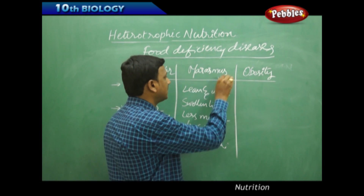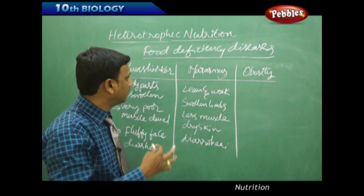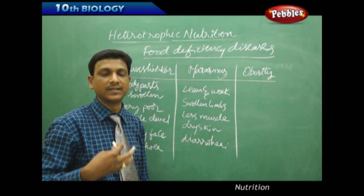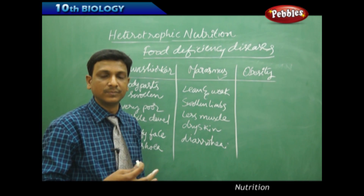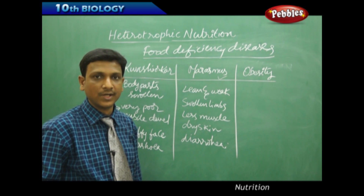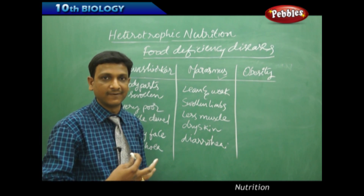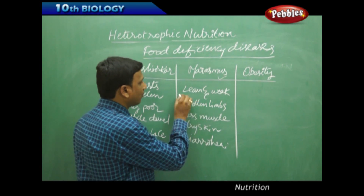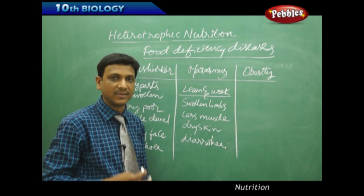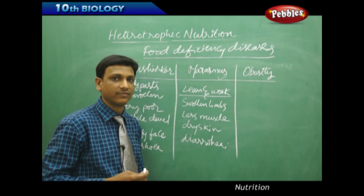The other disease is marasmus. This disease is caused due to the deficiency of both calories and proteins in the diet. It often happens to children born of mothers who give birth repeatedly with very short gaps, as the mother may not have proper strength and nutrients. Symptoms include a lean and weak body, swollen limbs, less muscle, less body weight, dry skin, and diarrhea.